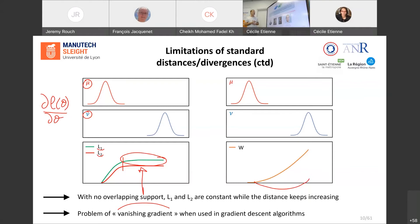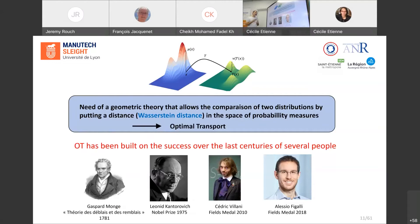Now you understand my claim: there is a real need in machine learning for a geometric theory that allows us to compare probability measures and put a distance in the space of probability measures. It turns out that this is exactly the goal of the theory of optimal transport, which comes with the so-called Wasserstein distance — which has all the main properties I showed before and can be used very efficiently in many machine learning and AI applications.